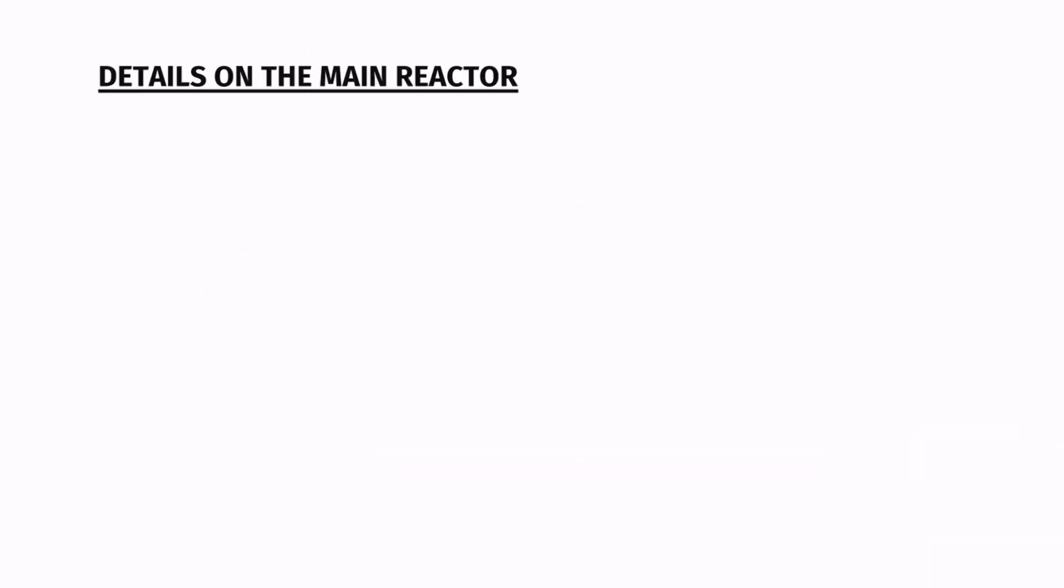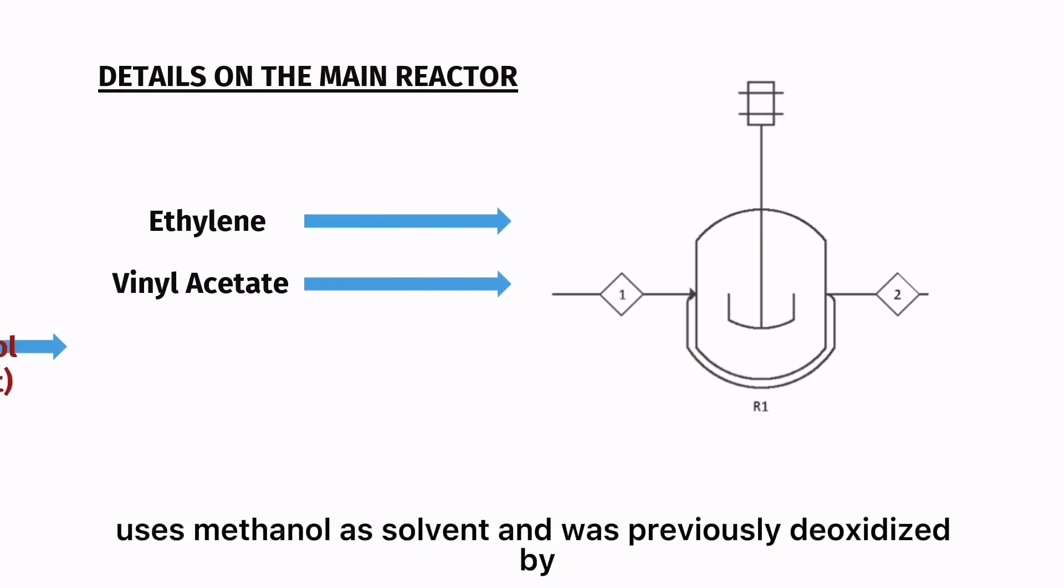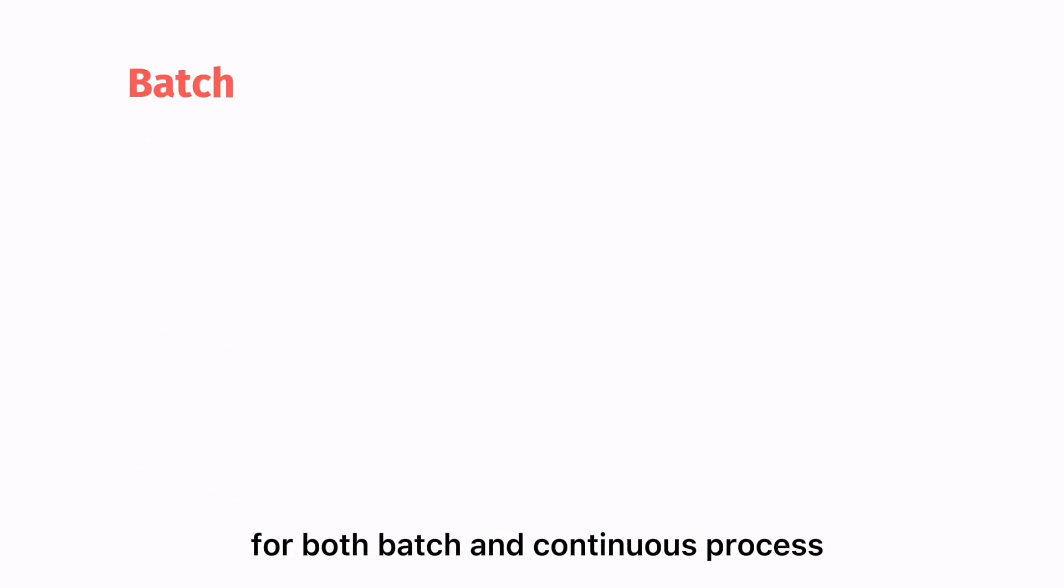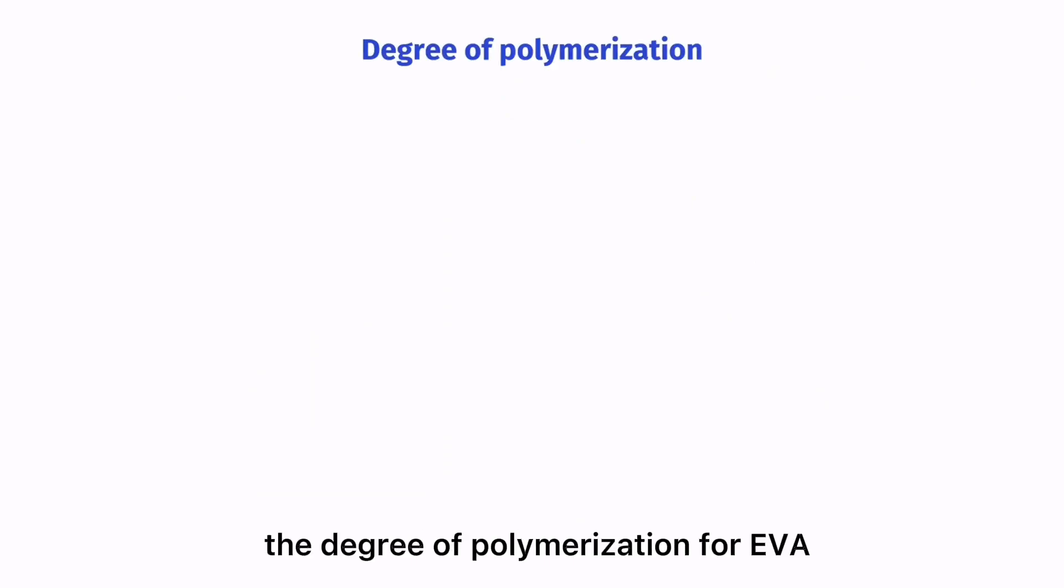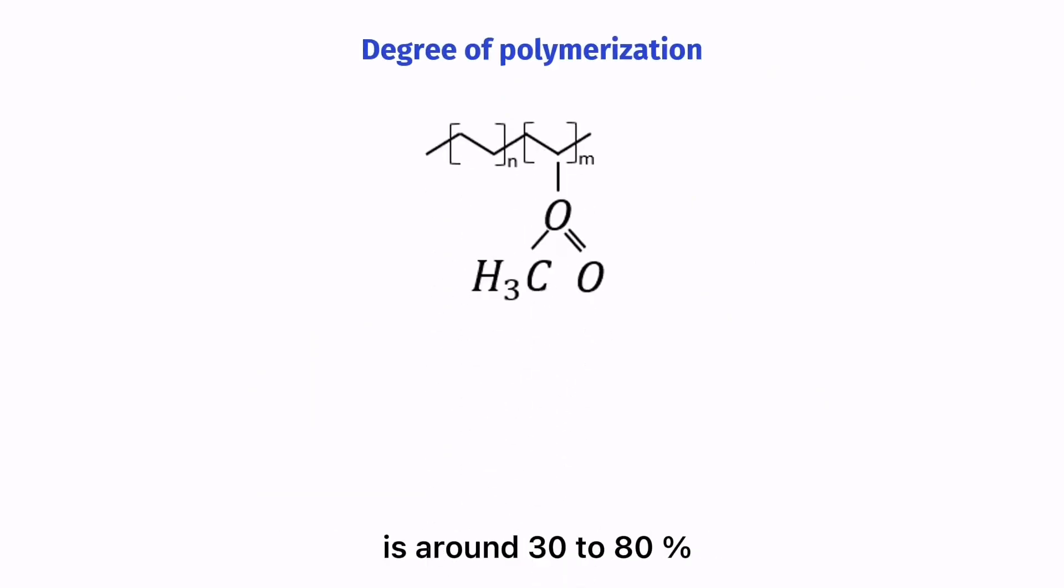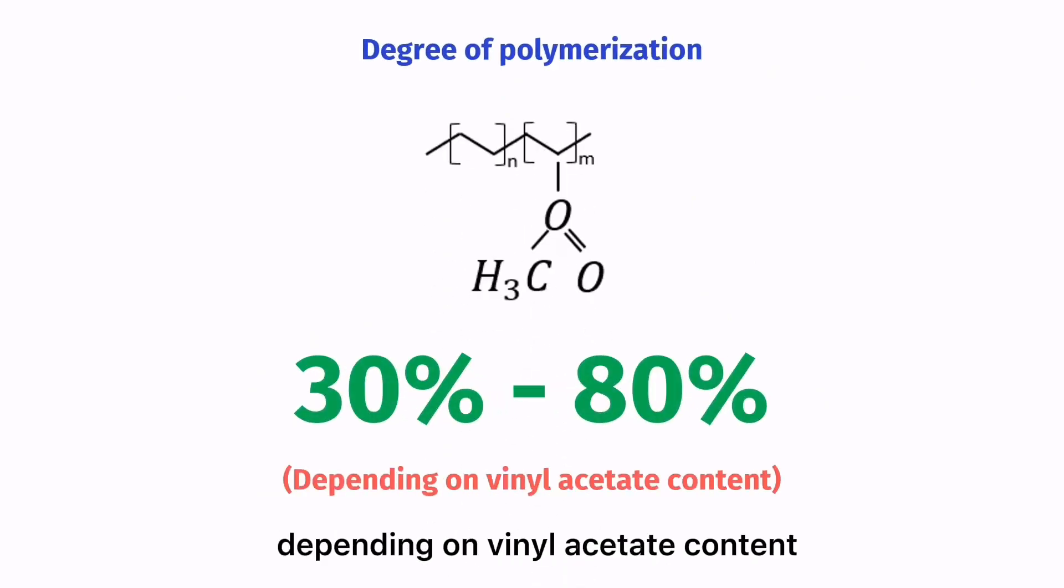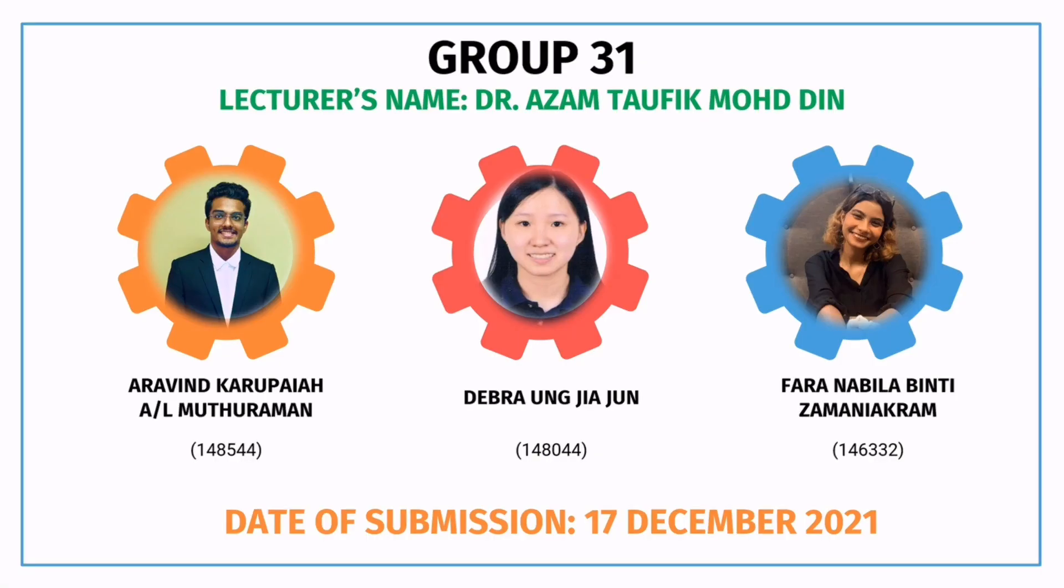Details on the main reactor: The main reactor which is R1 uses methanol as solvent and was previously deoxidized by nitrogen bubbling in advance. For both batch and continuous process, an average reaction time from 3 to 24 hours is preferred. In this particular process, the degree of polymerization for EVA is around 30 to 80 percent depending on vinyl acetate content.